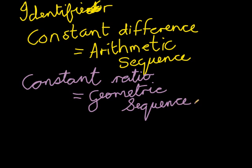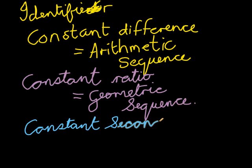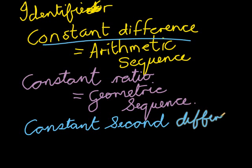Finally, we have constant second difference. This means the first difference isn't constant, but if we take differences again, we find a constant second difference. We'll look at examples later, but this is called a quadratic sequence.